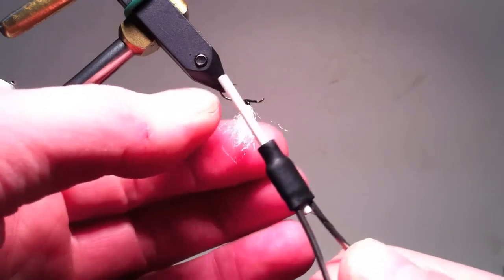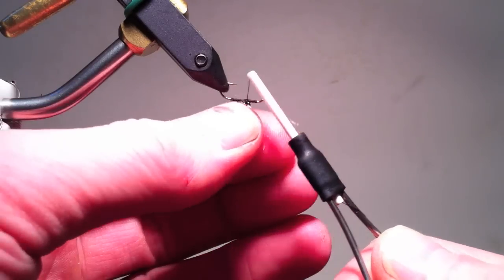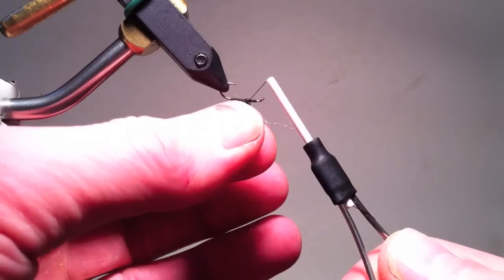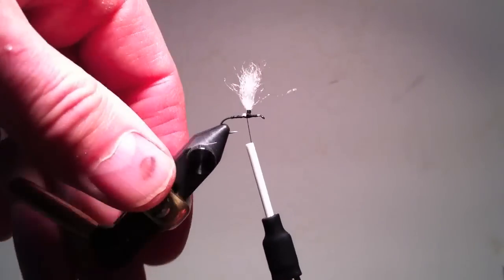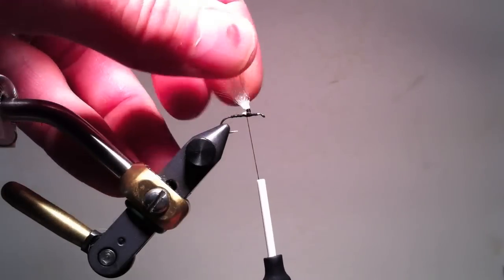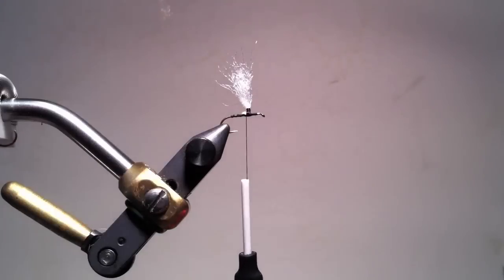I usually try to put a minimum of 10 wraps which firms up the base of the post and makes the diameter of the base of the post a little larger which allows more hackle fibers per turn.